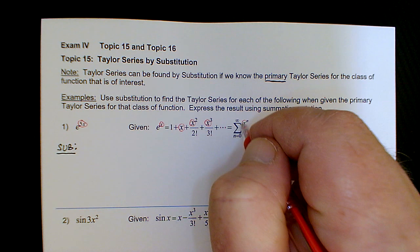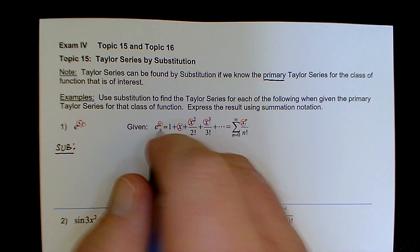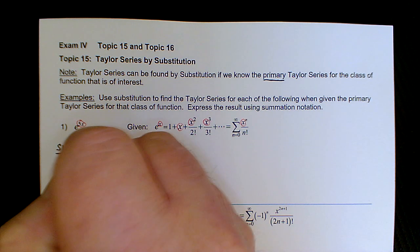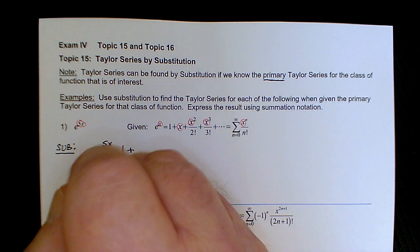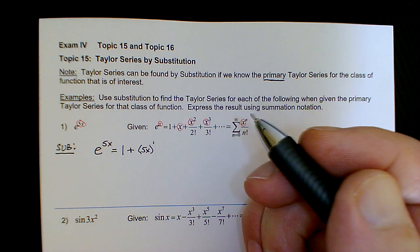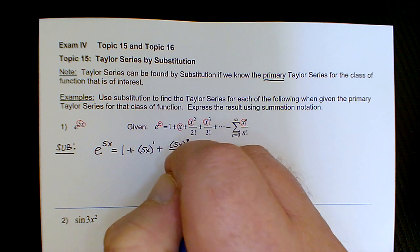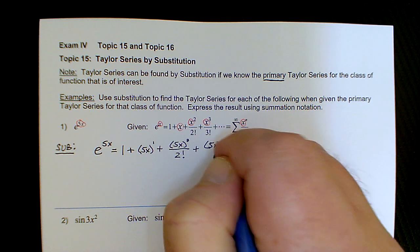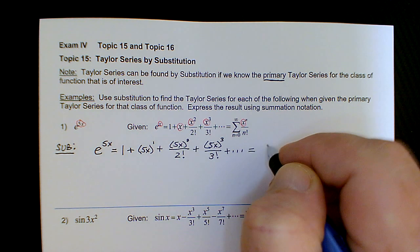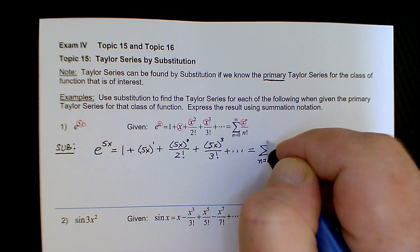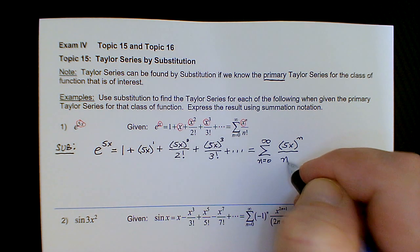It says to express the result using summation notation. So just replacing all the x's by 5x, we have e to the 5x is equal to: the first term is 1 plus 5x to the first, then plus 5x quantity squared over 2 factorial, then plus 5x quantity cubed over 3 factorial. And in summation notation, the sum as n goes from 0 to infinity of 5x quantity to the nth over n factorial.